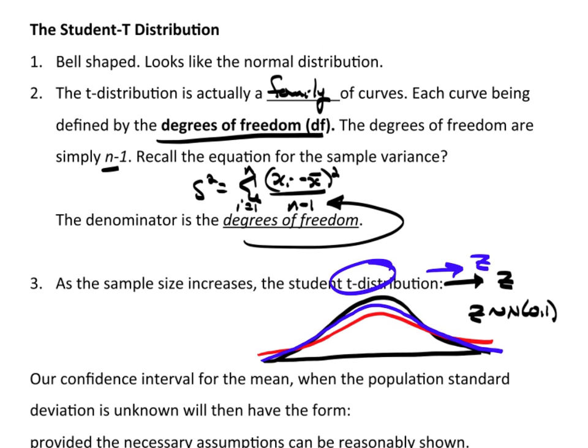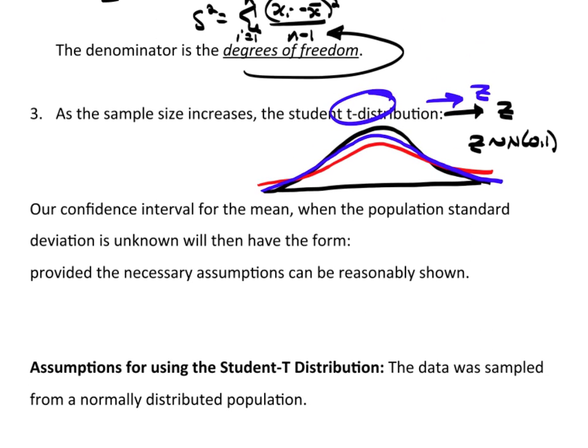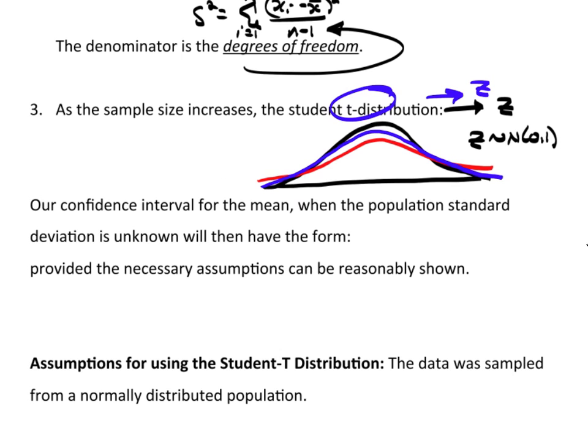So where are we now? Our confidence interval for the mean when the population standard deviation is unknown will then have the form x-bar plus or minus t—and this t has the same alpha over two, the exact same thing as z did, but of course we need the proper degrees of freedom. We need alpha and degrees of freedom to specify t—then s over the square root of n, provided the appropriate assumptions can be reasonably satisfied.